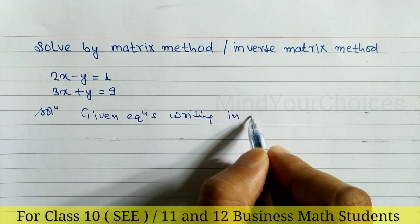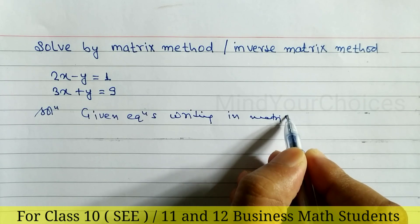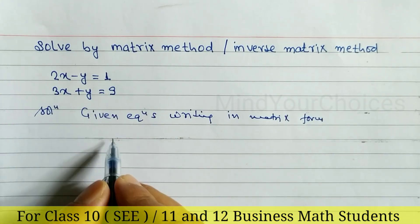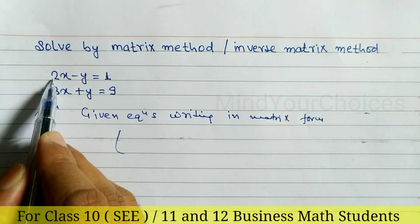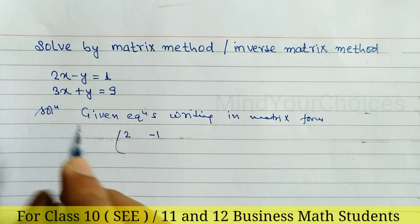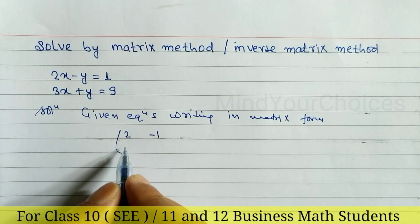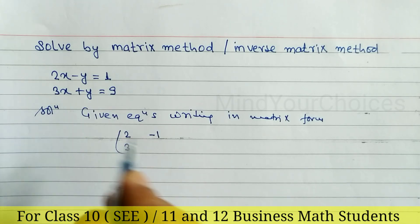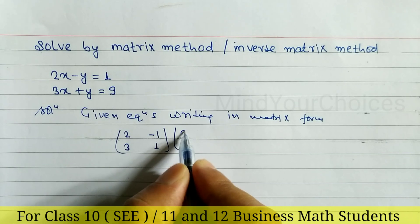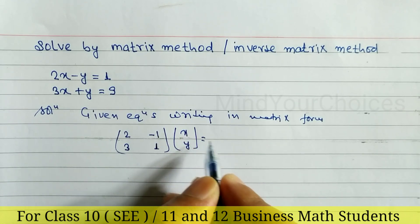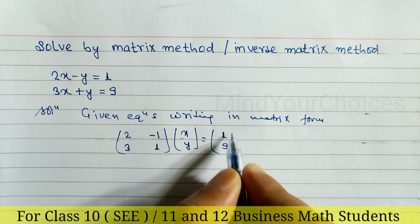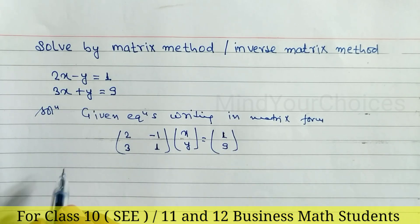First of all, we have to write the given linear equations in matrix form. The coefficient of x is 2, coefficient of y is minus 1. The coefficient of x in the second equation is 3, coefficient of y is 1. We write x, y, and after the equals sign the constant numbers are 1 and 9.